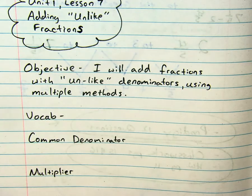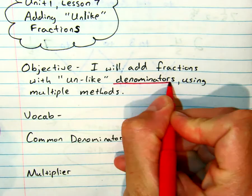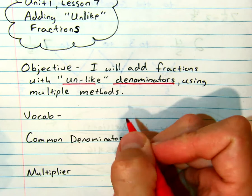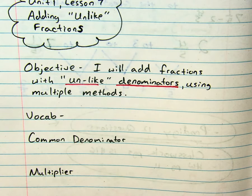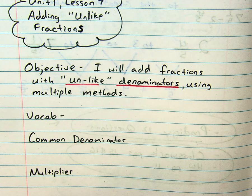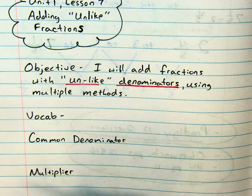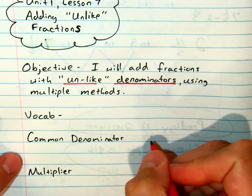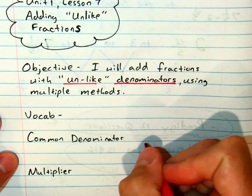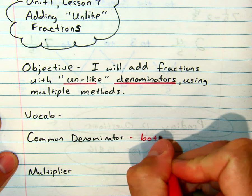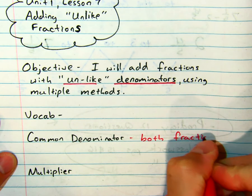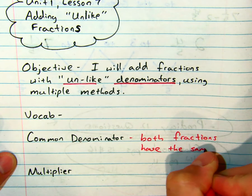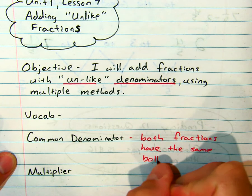Remember our fraction vocabulary here, denominator, that's our bottom number. And unlike means they are not the same. Just a quick review on vocabulary. We're talking common denominator. So if it's not the same, we need to have both the same bottom number.